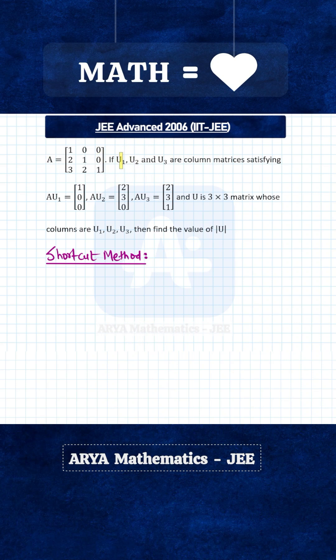A is this 3 cross 3 matrix, u1, u2, u3 are column matrices satisfying these three equations, and u is a 3 cross 3 matrix whose columns are u1, u2, and u3. Then we have to find the determinant of this matrix u.